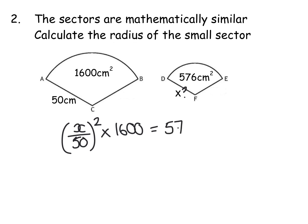And I know that whatever I did, it gave me the answer 576. I'm going to do the same thing again, so I'm going to write this as x squared over 50 squared. I'm going to divide by the 1600 and do 576 over 1600.